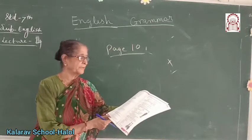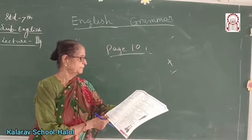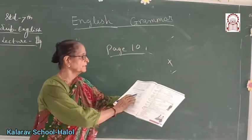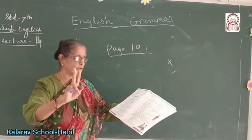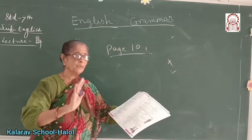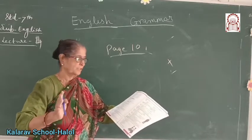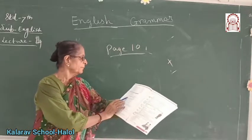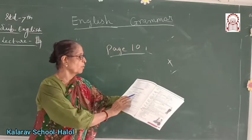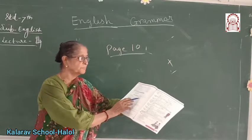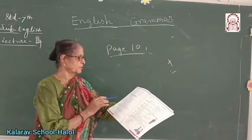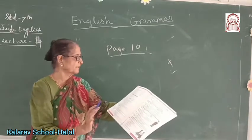Okay children, page number 10. Now we are going to do interrogative sentences. There are two types: yes and no sentences, and WH questions. We should remember that in an interrogative sentence, we place the auxiliary verb before the subject, and we always put a question mark at the end of an interrogative sentence.